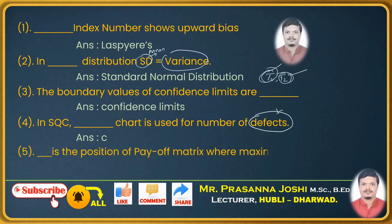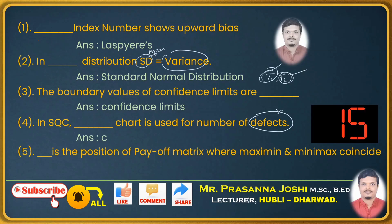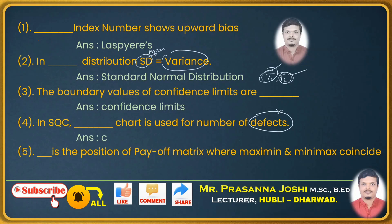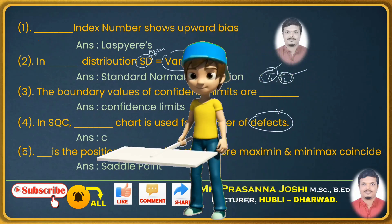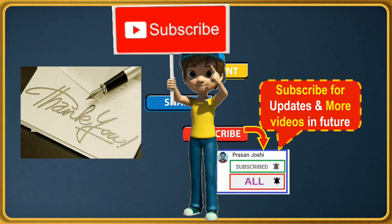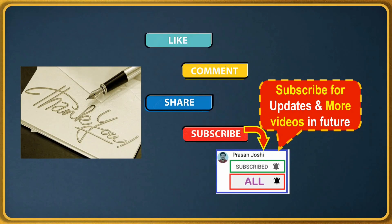Last question: dash is the position of the payoff matrix where maximin and minimax coincide. This is from game theory. When solving problems using the minimax and maximin principle, the position where both coincide is called the saddle point. The answer is saddle point.